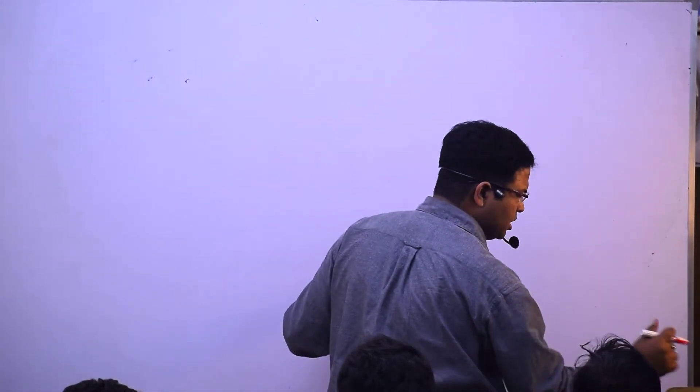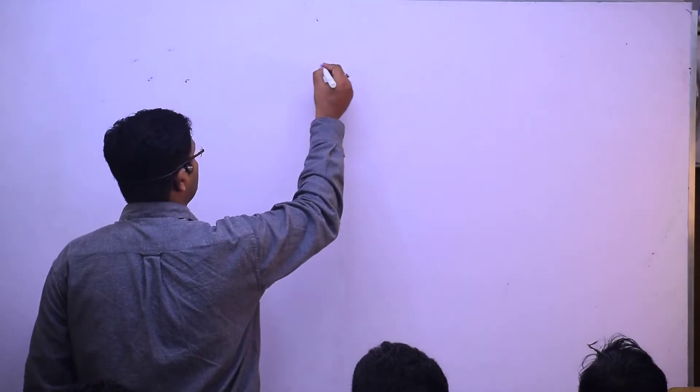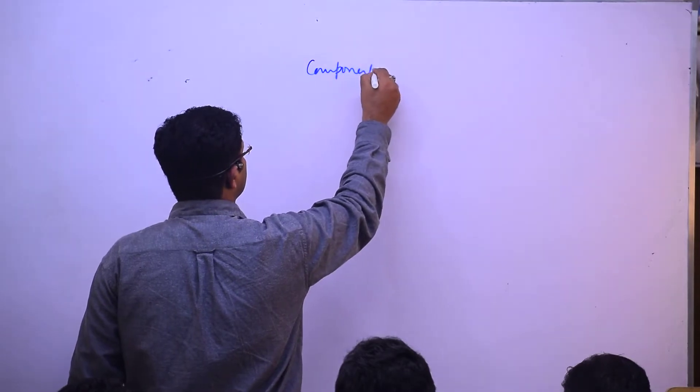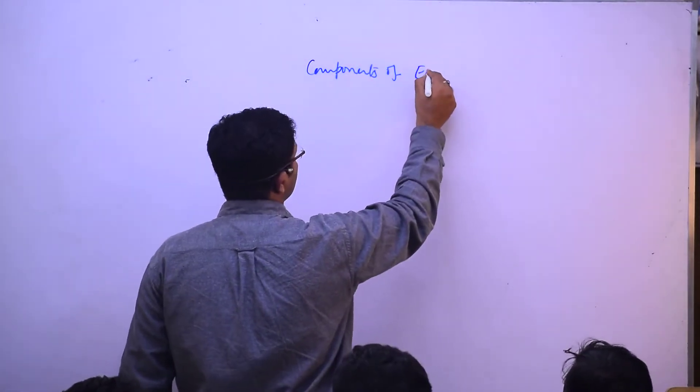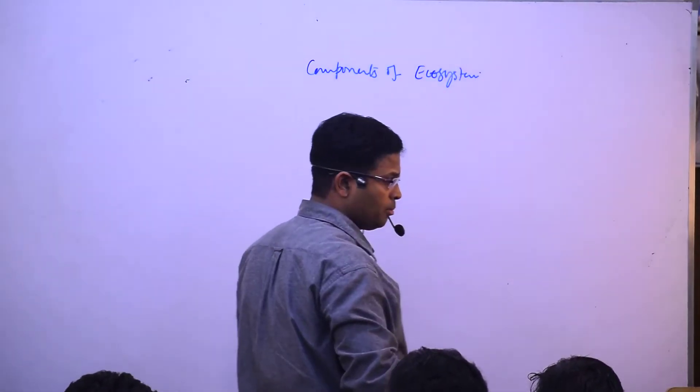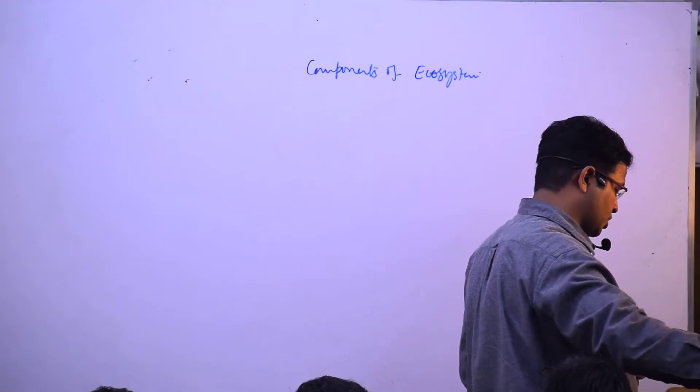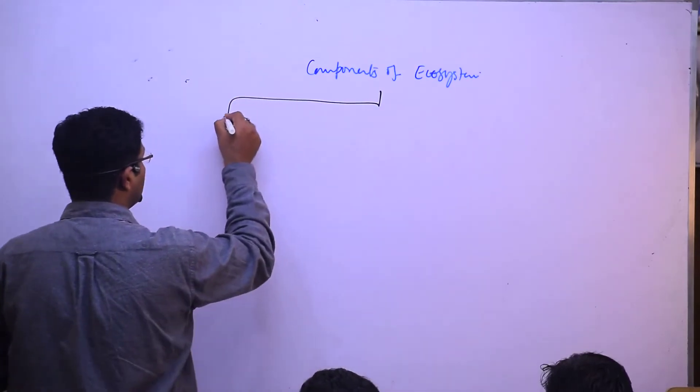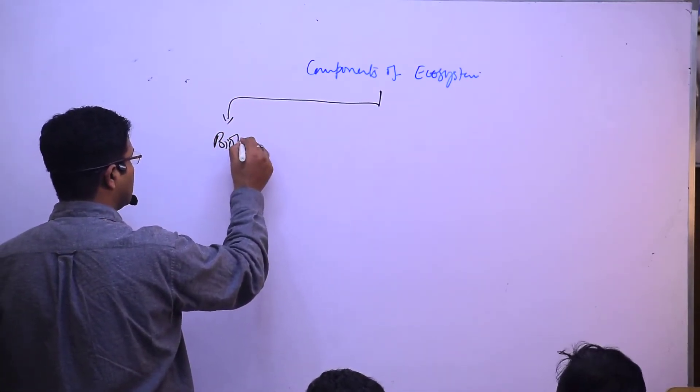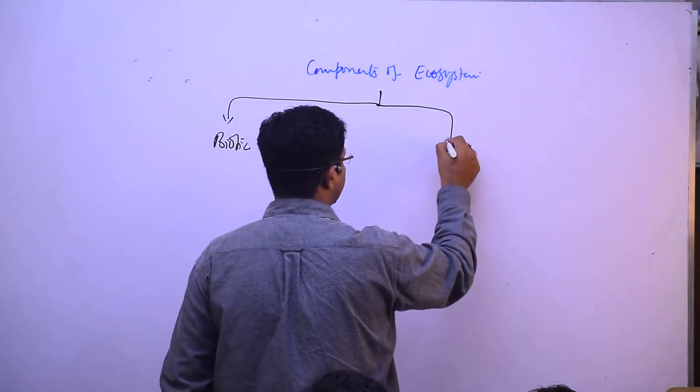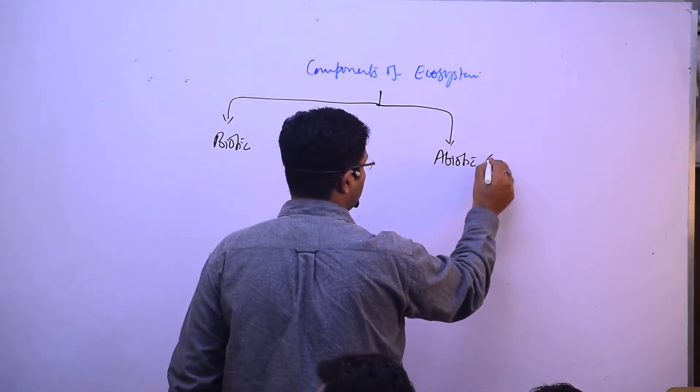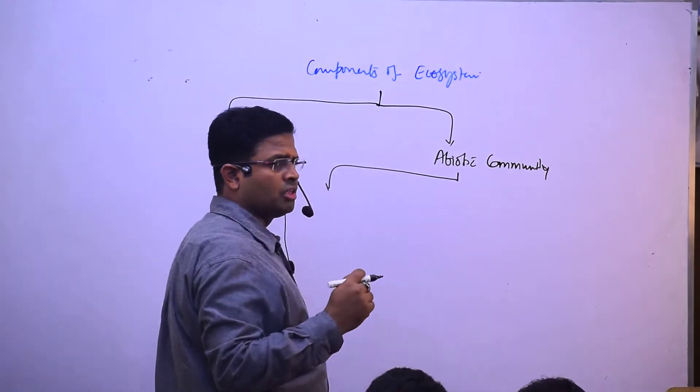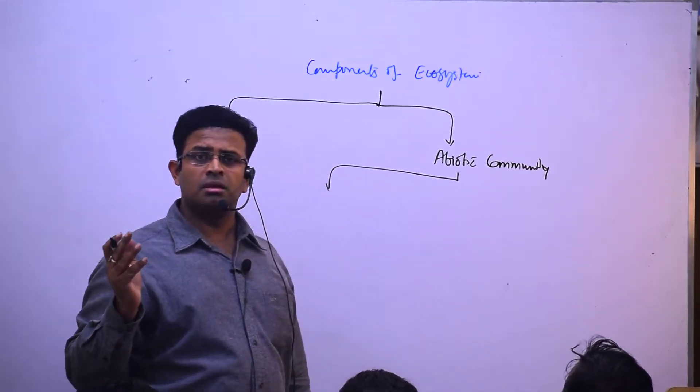Now we are going to see components of ecosystem. Components of ecosystem - we have biotic component and abiotic community. Abiotic community includes hydrosphere, lithosphere, and atmosphere.